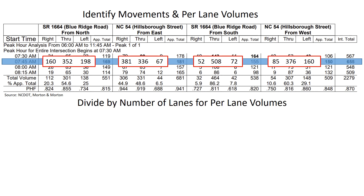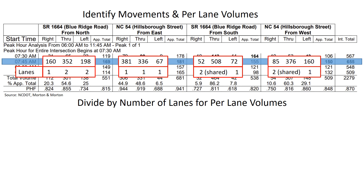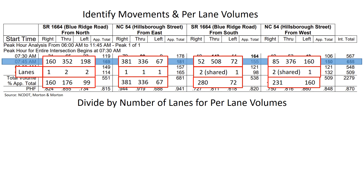Next, we're going to divide by the number of lanes to get per-lane volumes, which is necessary for the quick estimation method. Here are the actual lane configurations. There are some shared right and through lanes on Blue Ridge Road from the south and on Hillsborough Street from the west; the rest have exclusive lanes. In cases where lanes are shared, we sum those movements and divide by two, which assumes an equal distribution of traffic across those two lanes — a necessary assumption for this quick estimation method.